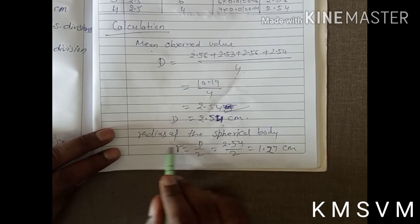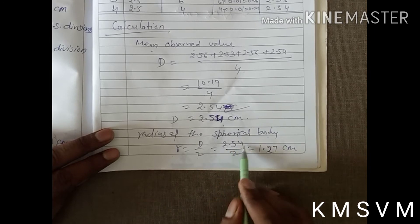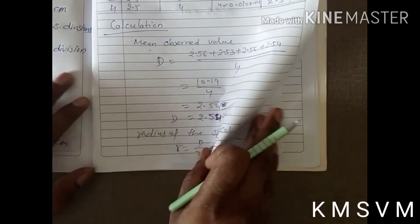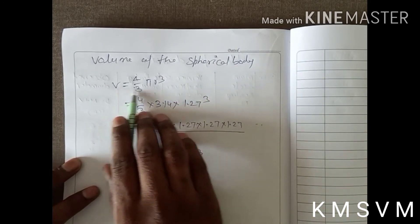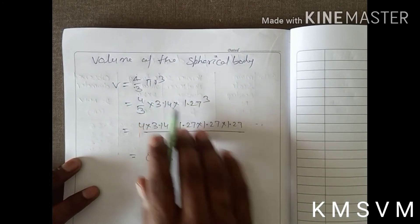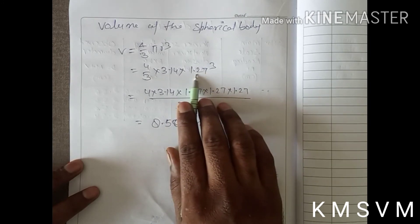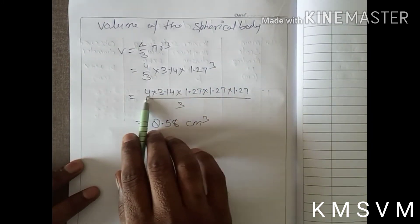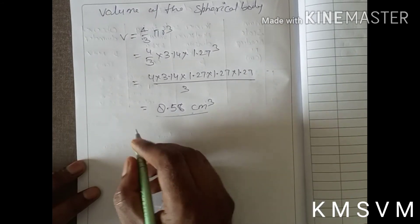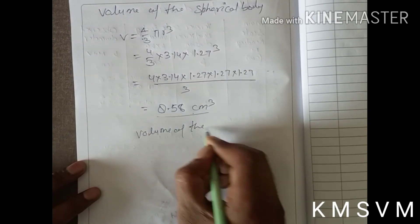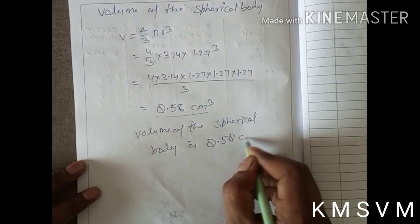Now we are finding the radius of the spherical body. The radius equals diameter divided by 2, which is 2.54 / 2 = 1.27 cm. Now we calculate the volume. The formula is V = (4/3)πr³. Substituting π = 3.14 and r = 1.27 cm, we find the volume of the spherical body is 8.58 centimeter cubed.